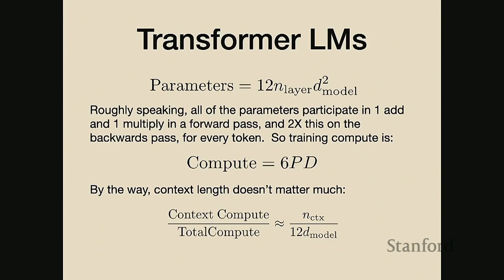You might wonder whether there's a lot of computation involved in processing long sequences. Dense attention in transformer models is O(n²) with respect to context length - that's absolutely true. However, if you work out the coefficients, the ratio of computation done in the context direction versus moving up the layers of the model is roughly n_context / (12 × d_model). Since d_model for GPT-3 is already 10,000 - making the denominator about 100,000 - even with quite long contexts and the dumbest possible dense attention, the compute in the context direction is not always so much.